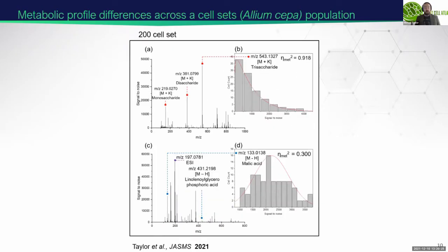This is data from a different study where we replicated this by screening more cells — a 200-cell set screened sequentially and automatically. We're looking at two different polarities in mass spec: positive polarity species and negative polarity species, and I've plotted two histograms. The potassium trisaccharide has a gamma distribution, whereas the low molecular weight malic acid — an organic acid that's a good marker appearing in a number of different phenotypes — has a normal distribution. There's really no limit to how many cells we can screen with this approach; it's really dependent upon the scan rate of the detector.